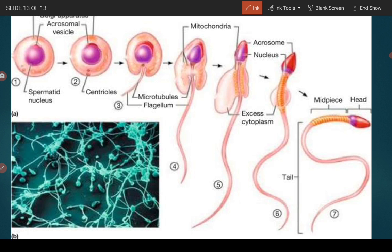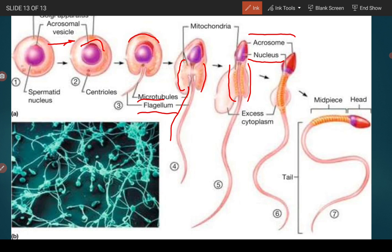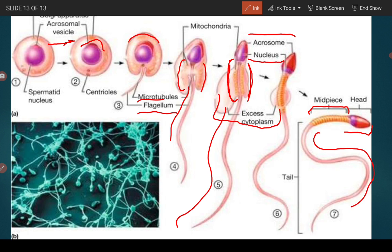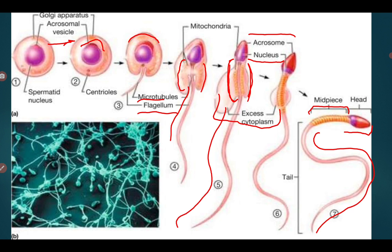In the final picture, we can clearly see the Golgi apparatus forming the acrosomal vesicle, the microtubules forming the flagellum for motility, and the mitochondria arranging themselves in the neck region in a spiral structure. The acrosome is visible, the nucleus has been condensed, the neck has been formed with the mitochondria arranged in a spiral, excess cytoplasm is being removed, and the flagellum has been formed. The mature sperm has a head, a mid-piece or neck, and a long tail.